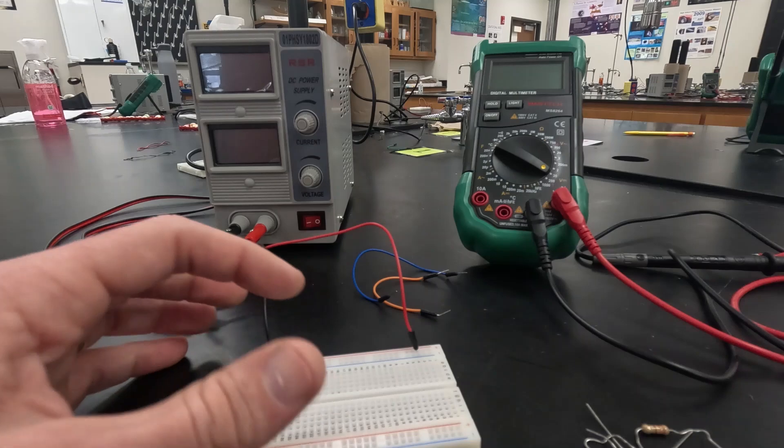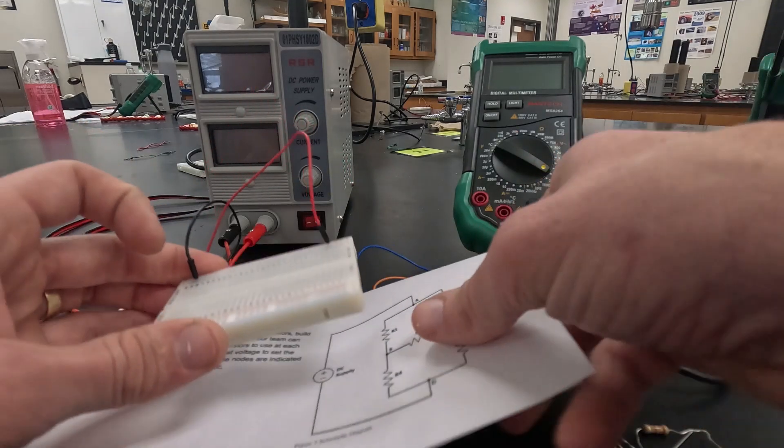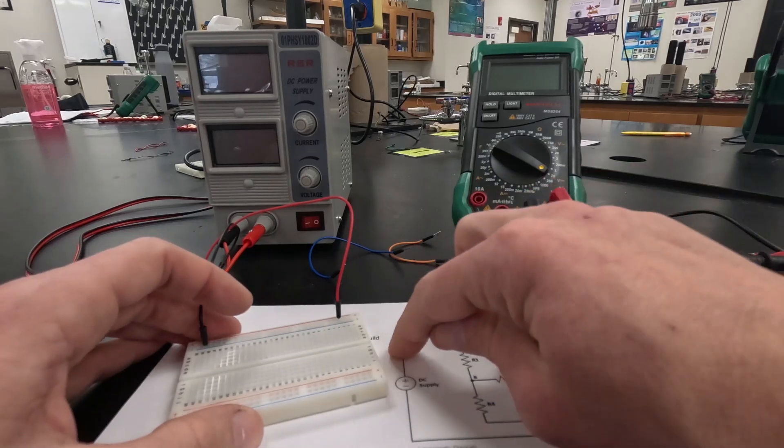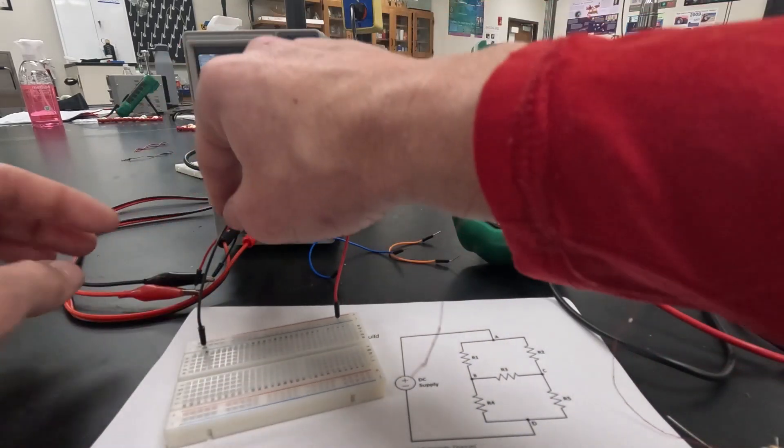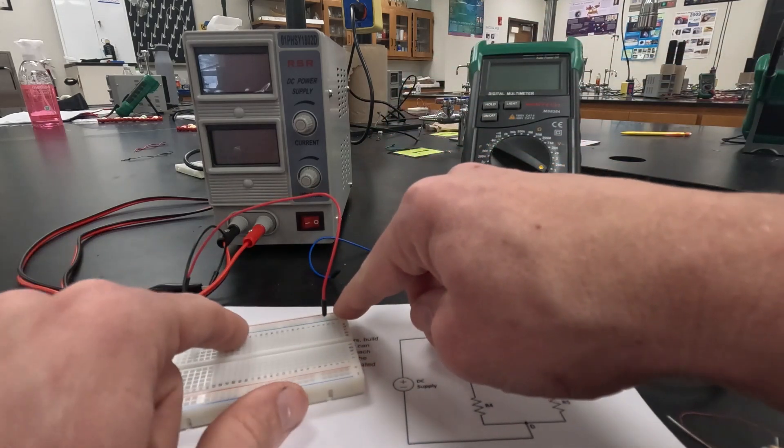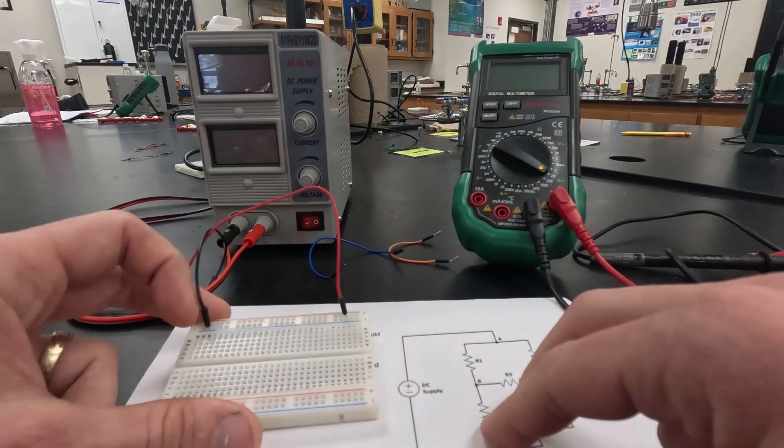We're going to arrange them in our breadboard in this pattern that we see here on our diagram. Like usual we're going to start at the very beginning. We've got to come in from our power supply. I'm going to come in from the red on our power supply into our positive end on our breadboard. Those are connected vertically.